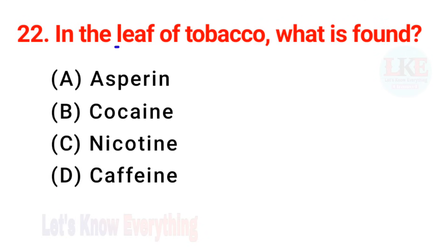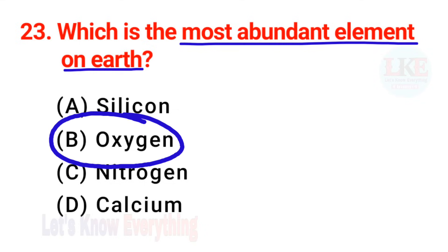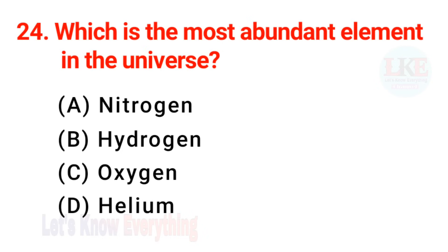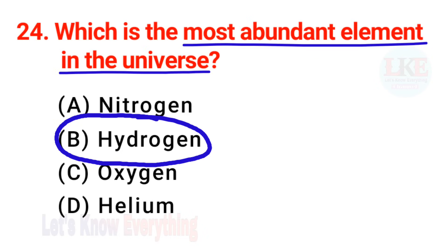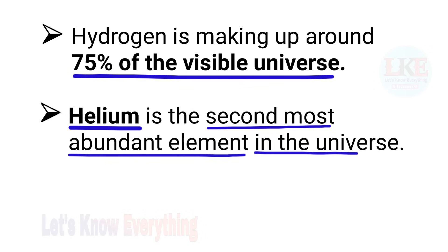Question number 22: in the leaf of tobacco, what is found? Right answer — nicotine. Question number 23: which is the most abundant element on earth? Right answer — oxygen. Oxygen makes up about 47% of the earth's mass. Question number 24: which is the most abundant element in the universe? Right answer option B — hydrogen. Hydrogen makes up around 75% of the visible universe. Helium is the second most abundant element in the universe.